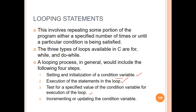The looping variable or control variable must be defined, and the same steps are involved in the looping process. The three looping statements are the for loop, while loop, and do-while loop. The steps involving the looping variable or control variable are the same across these loops.